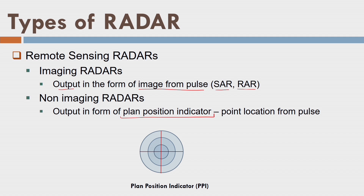In non-imaging radar, the output is in the form of a plan position indicator (PPI). A transmitter sends radar pulses toward an object; when the transmitted pulses interact with the surface, the surface returns a reflected signal received by the receiver. In some cases, the signal becomes very weak over large distances. So a primary radar on the ground surface transmits, and a moving object in the sky has a secondary radar (transponder) that, upon receiving the weak signal, transmits a new stronger signal back to the ground receiver.